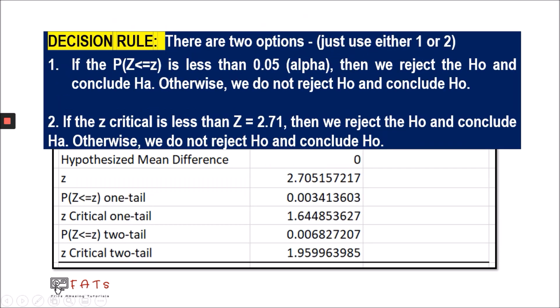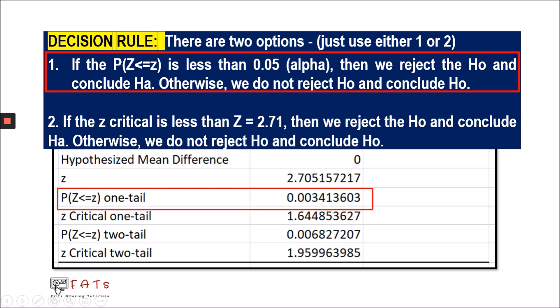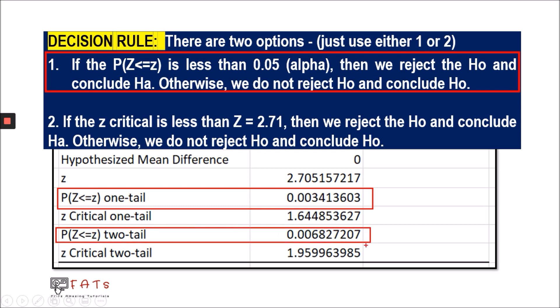To determine which hypothesis will be used for our conclusion, we use a decision rule with two options. Option one is to compare the computed p-value to 0.05. If it happens to be less than 0.05, then we will reject the null hypothesis and conclude the alternative hypothesis; otherwise, we will not reject the null hypothesis. In this example, we have two computed p-values: one for one-tail and one for two-tail. Both values are actually less than 0.05, so regardless of which one is used, the conclusion is still rejecting the null hypothesis.